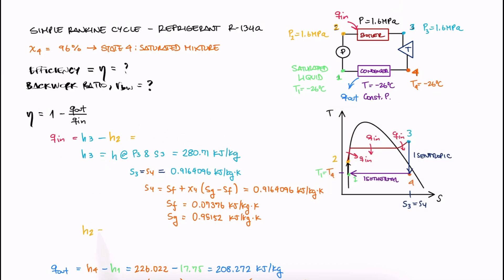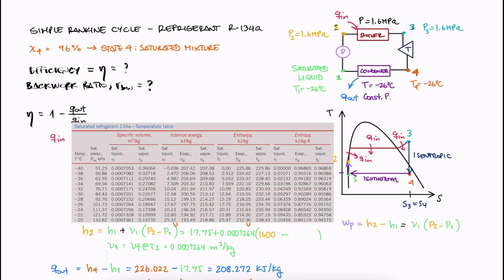To find H2, we know that the work of the pump is both H2 minus H1, and also V1 times P2 minus P1. So we can solve for H2. P2 we have, and H1 and V1 are just HF and VF at T1, because 1 is a saturated liquid.